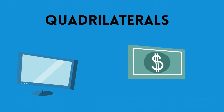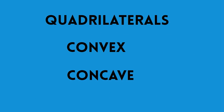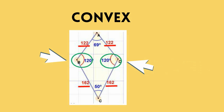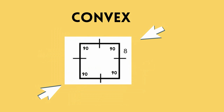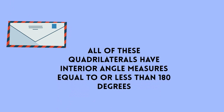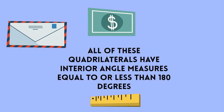Quadrilaterals can be further divided into convex and concave quadrilaterals. A convex quadrilateral does not have an interior angle greater than 180 degrees. The most common quadrilaterals we encounter are convex because they do not have an interior angle measure greater than 180 degrees. Notice in these next examples that all interior angle measures are 180 degrees or less.